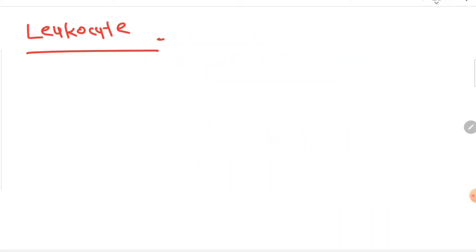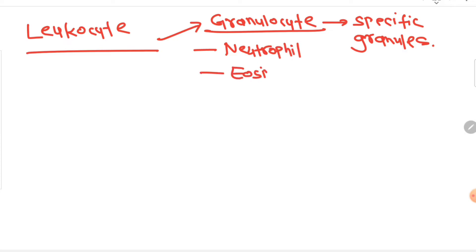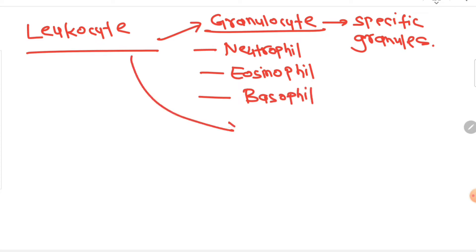Leukocytes — white blood cells — can be divided into two varieties: granulocytes and non-granulocytes. Granulocytes have specific granules that can be seen microscopically by Leishman stain or any Romanowsky stain. Examples of granulocytes are neutrophils, eosinophils, and basophils, while examples of non-granulocytes are monocytes and lymphocytes.